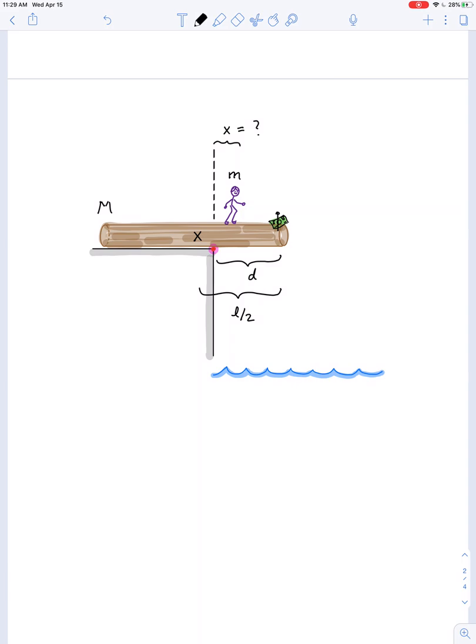Solve for X. Notice we've labeled L over 2, the distance from the end of the log to the center of mass. So what we're really interested in is just this little distance right here. How far is the center of mass, which is going to be the point at which the force of gravity for the log is acting? How far is that from the axis of rotation?